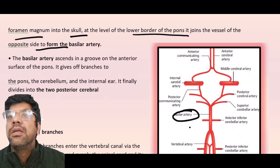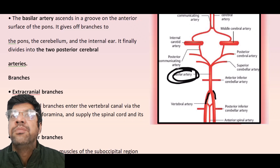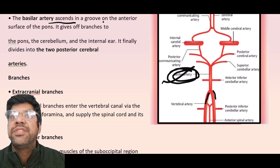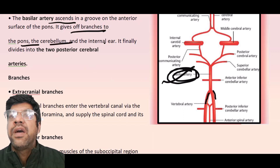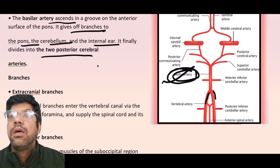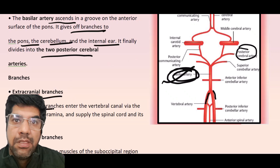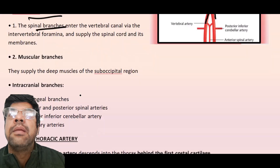The vertebral artery ultimately forms the basilar artery. It gives branches to the bone, cerebellum, and internal ear, and finally divides into the two posterior cerebral arteries. Its branches include the spinal branch, muscular branch, and intracranial branch.